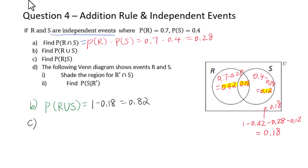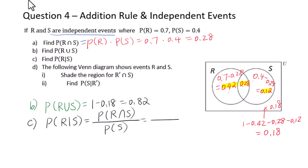For part c, find P(R | S). Using the formula: P(R ∩ S) over P(S). P(S) = 0.4 and P(R ∩ S) = 0.28. So we get 0.28 over 0.4 = 0.7.